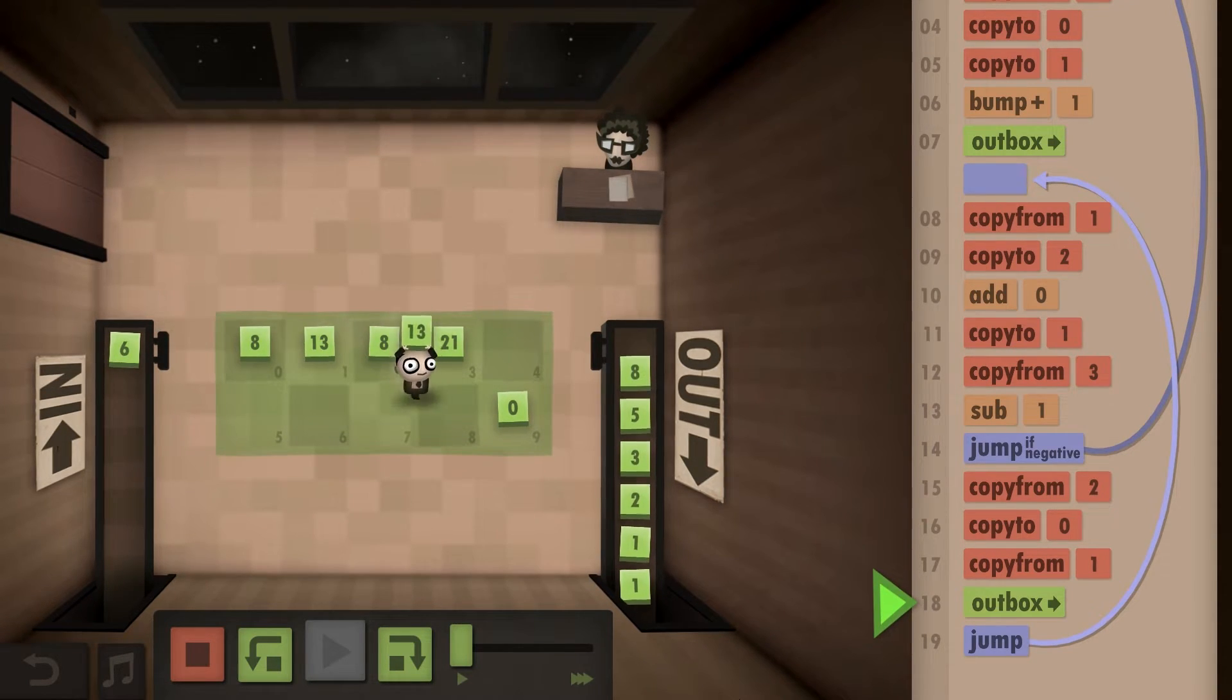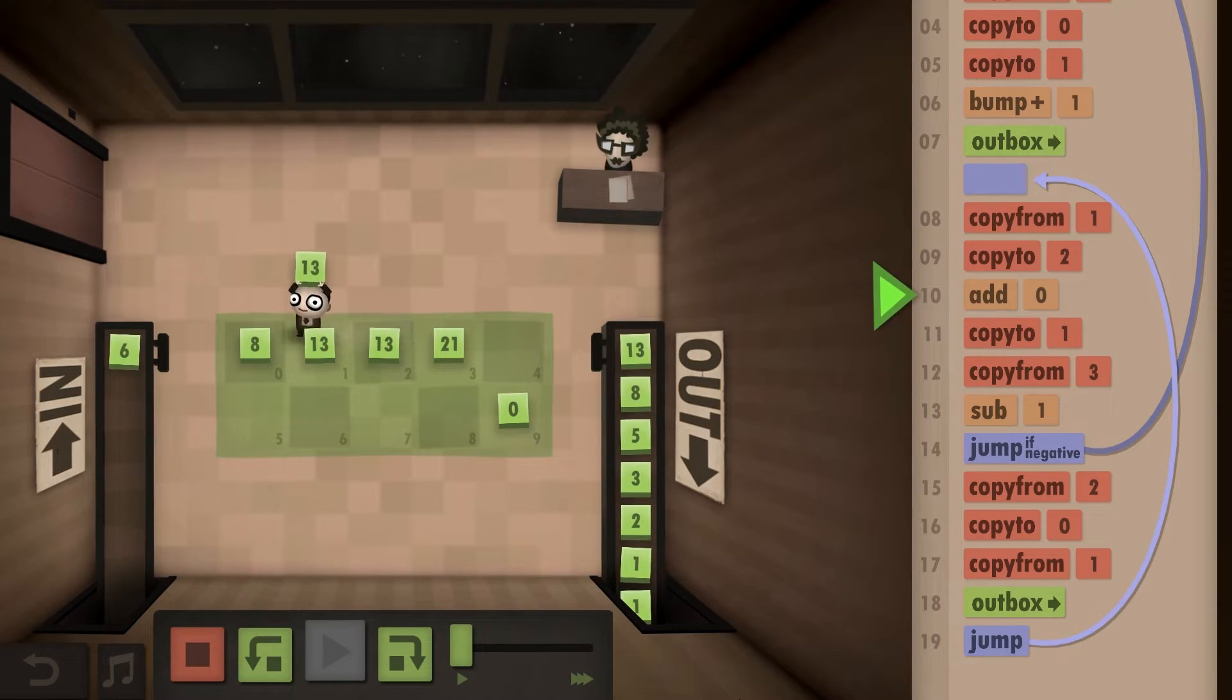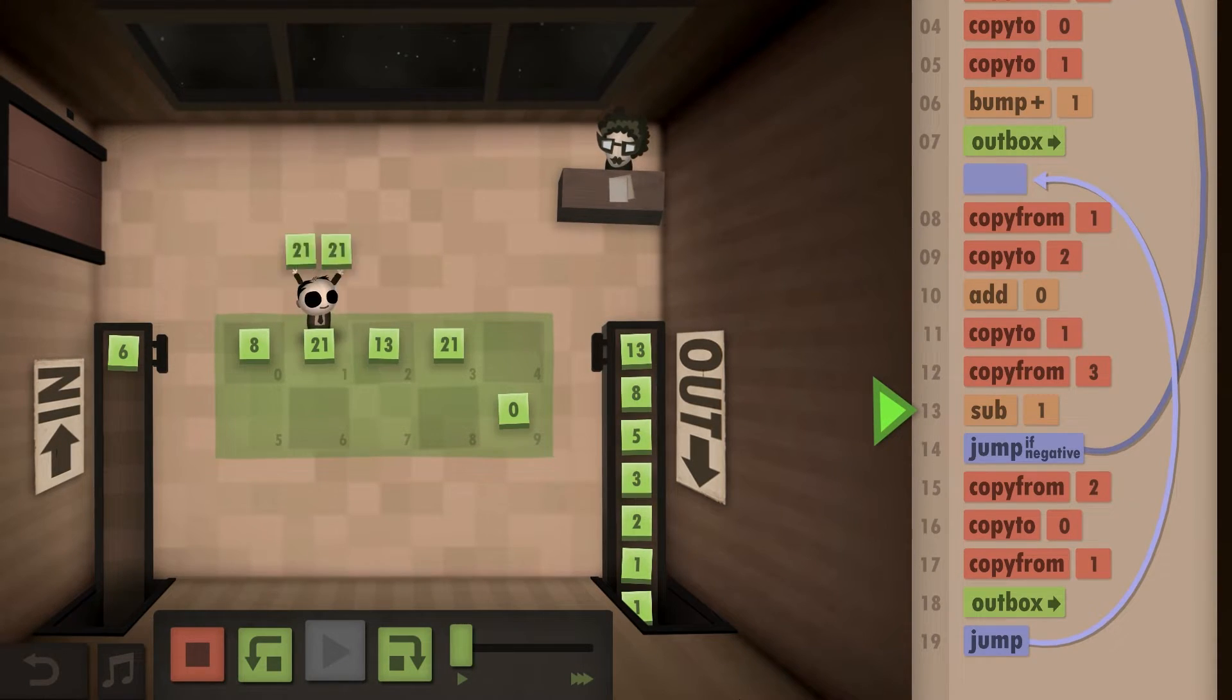But it was Fibonacci that basically popularized these numbers. Since he was actually considered to be the most talented mathematician in the Middle Ages, he made them essentially his own, and today we know them as the Fibonacci numbers.